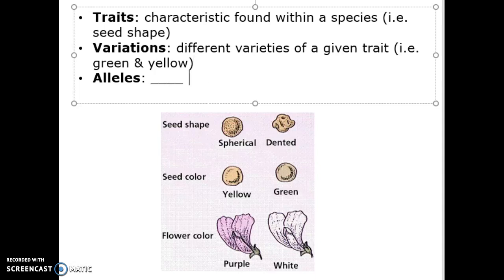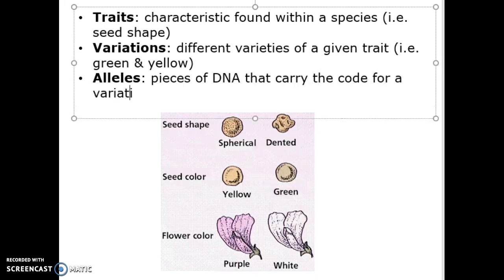What I want you to do is be comfortable with the difference between a trait and variations. Traits are characteristics found across a species. Variations are varieties of the trait. Now the allele or alleles are the pieces of DNA that carry the code for a variation, or we would say the trait.